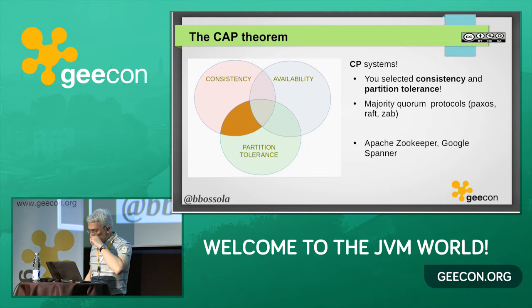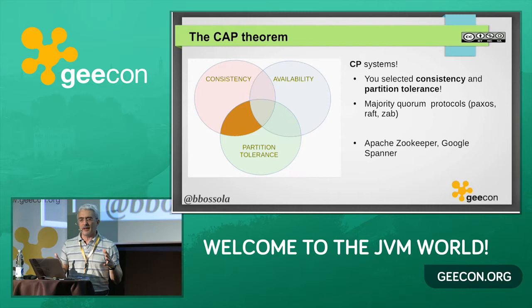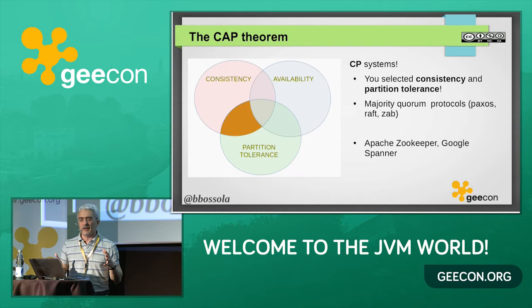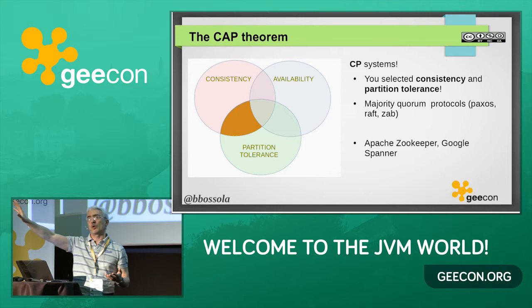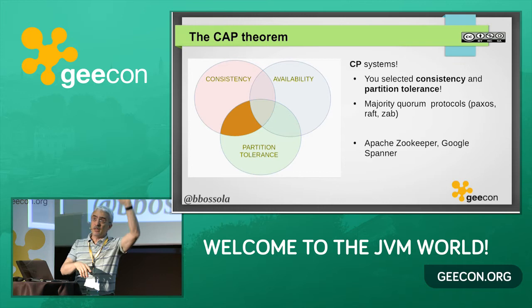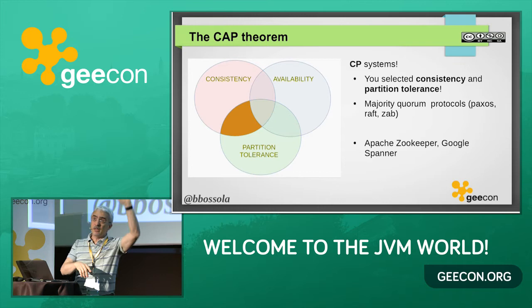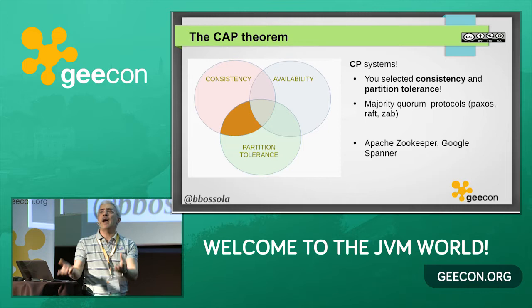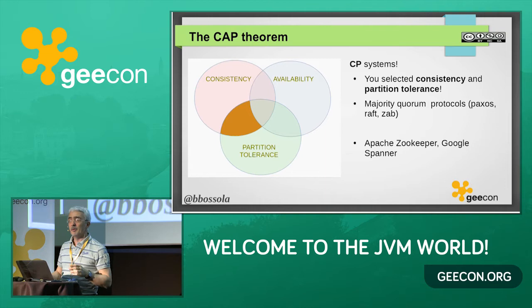The third system is CP — consistency and partition tolerance, sacrificing availability. In this system, when a partition happens, a segment of the system may not work — but the rest will. Out of five nodes, three will work and two will work read-only or not at all. These use majority quorum — to ensure data is valid, the majority needs to agree. Examples are Apache ZooKeeper and Google Spanner.